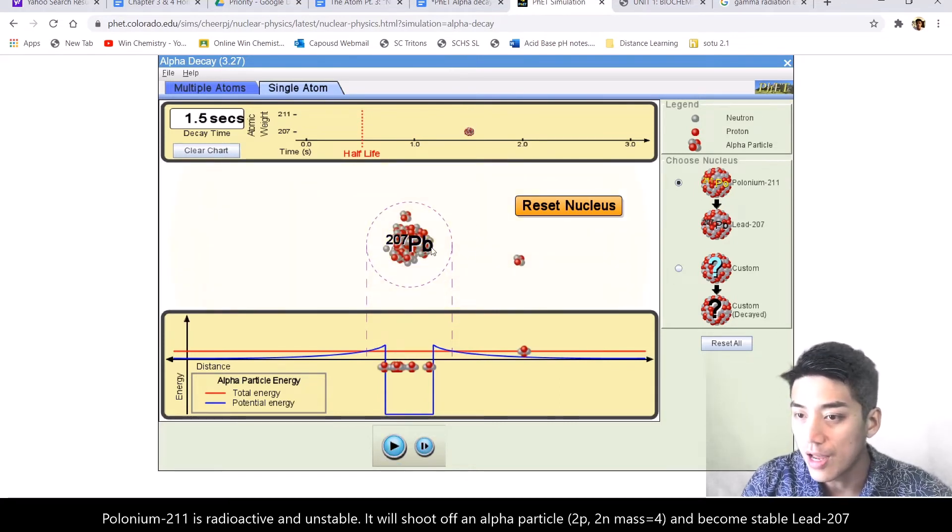I just hit pause. And now that polonium-211 has now changed into lead with a mass of 207. Because it lost a bit of itself.